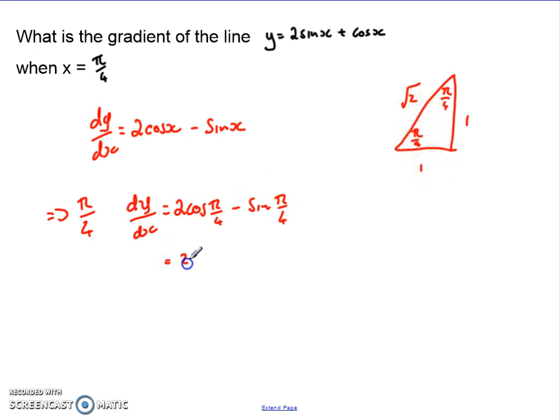So that then becomes 2 times 1 over root 2, take away 1 over root 2. So that's 2 of the 1 over root 2s, take away 1 over root 2. That simplifies to 1 over root 2. So my gradient of the line at that point is 1 over root 2.